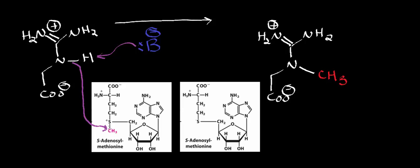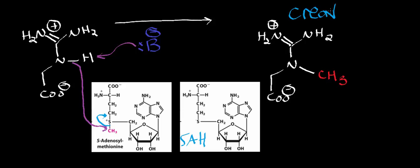When those electrons attack the methyl group, there has to be a leaving group. The leaving group is essentially the whole rest of the SAM molecule. This molecule is abbreviated SAH — S-adenosyl homocysteine. Whenever SAM transfers a methyl group, the leaving group or product is always S-adenosyl homocysteine. In this particular reaction, we took guanidinoacetate, transferred a methyl group to the nitrogen, and generated creatine.